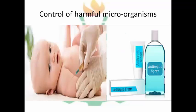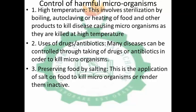Let's learn about the control of harmful microorganisms. The control of microorganisms includes high temperature. This involves sterilization by boiling, autoclaving, or heating of food and other products to kill disease-causing microorganisms, as they are killed at high temperature. So we use high temperature to sterilize, meaning to clean our food and other products of disease-causing microorganisms.